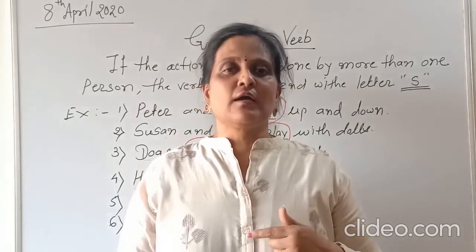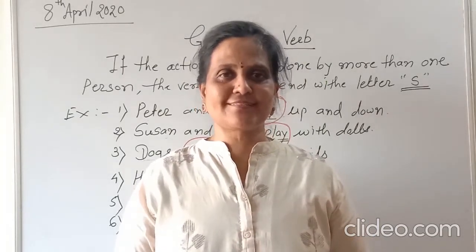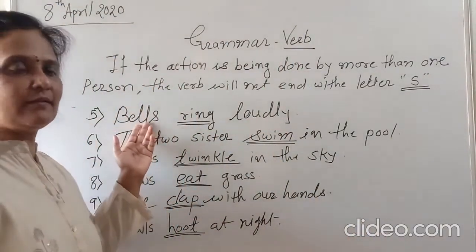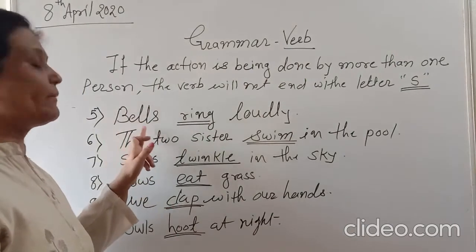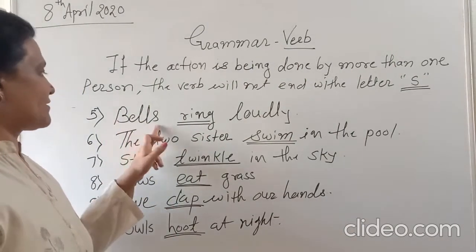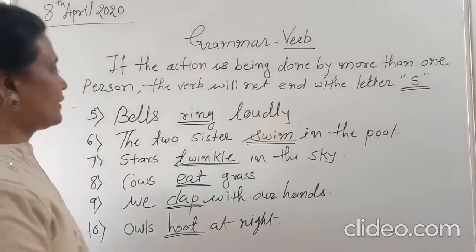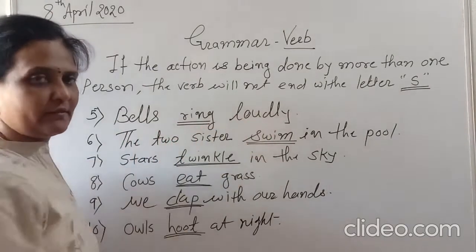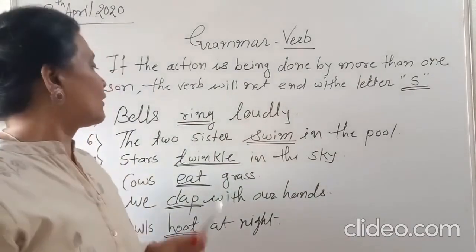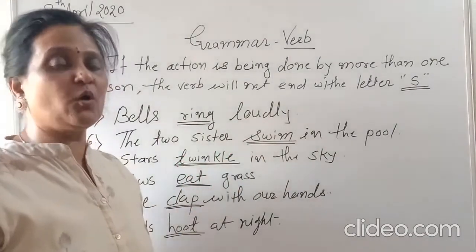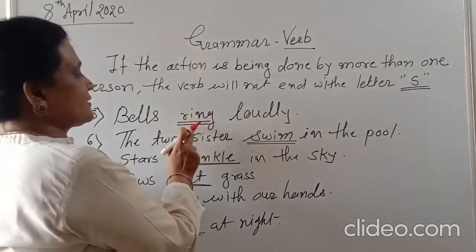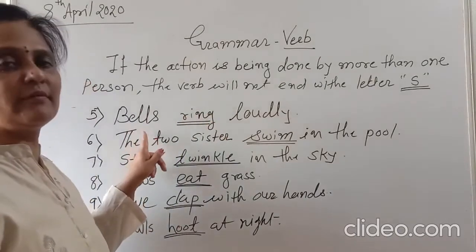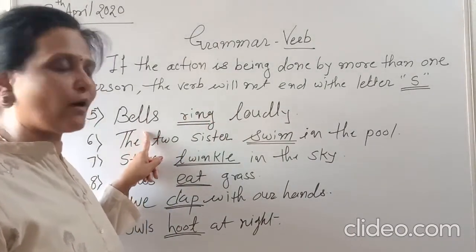Let's see more examples. Bells ring loudly. Here are bells — many bells, more than one. Bells is the plural noun, with 's' added. Bells ring loudly. More than one bell is here. The action word is ring. We cannot use 's' here because bells are here — many bells are here, plural nouns are here. So we write only 'ring', not 'rings'.